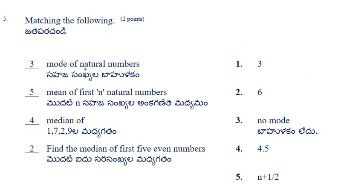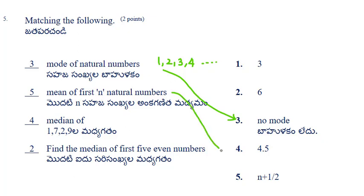Next problem: match the following. The mode of natural numbers — natural numbers start from 1, 2, 3, 4 and so on with no repetition — so there is no mode, answer is option 3. The mean of the first n natural numbers is the direct formula: (n+1)/2. The median of the first n natural numbers is also (n+1)/2.